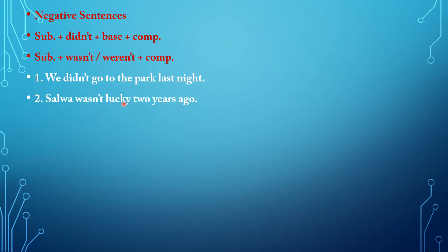Another example: سلوة wasn't lucky two years ago. سلوة is the subject. Here we used verb to be because we have an adjective. Was not, two years ago — the complement of the sentence. Last night and ago are adverbs that we can use with this tense.